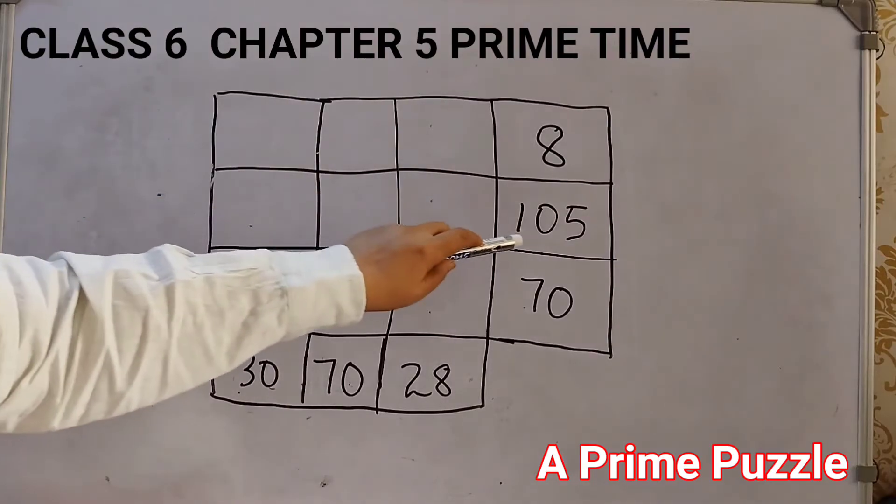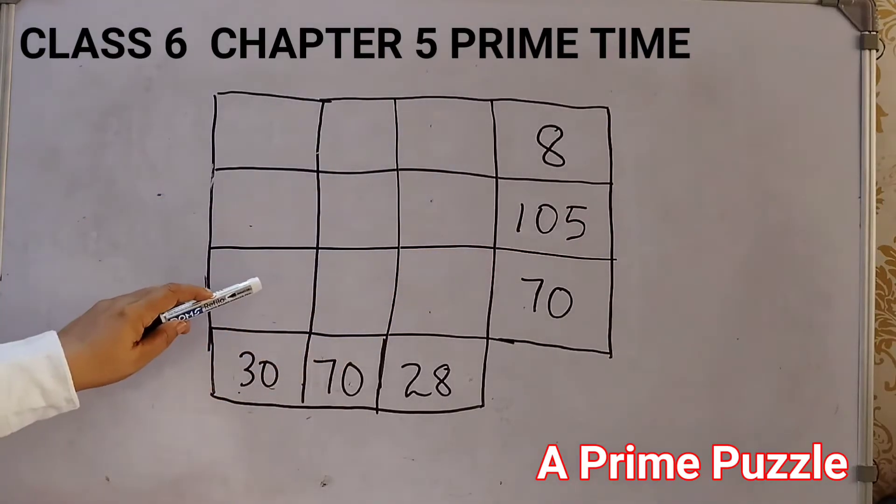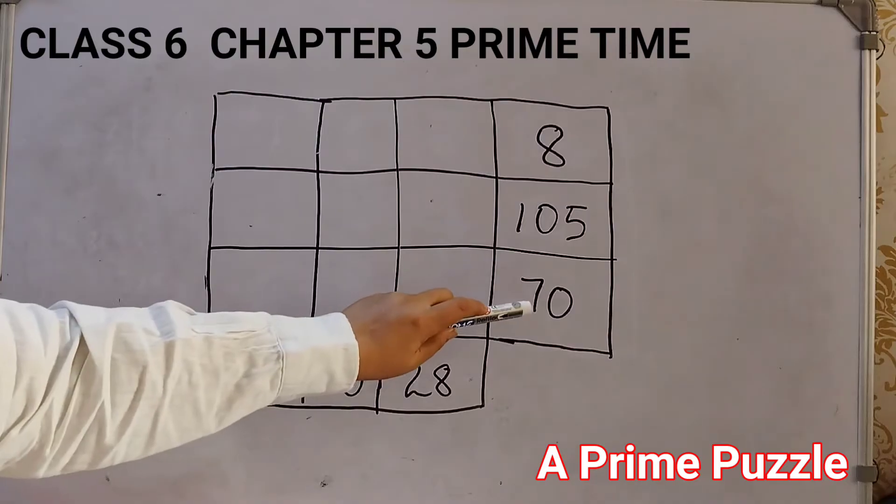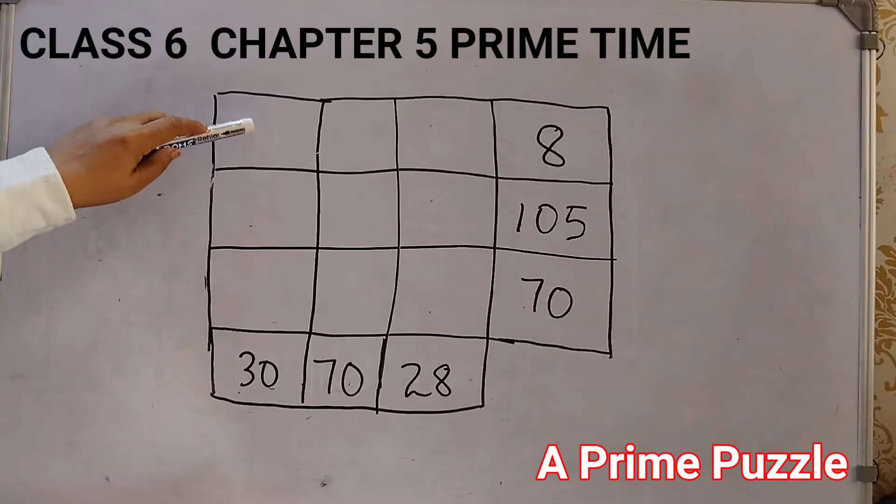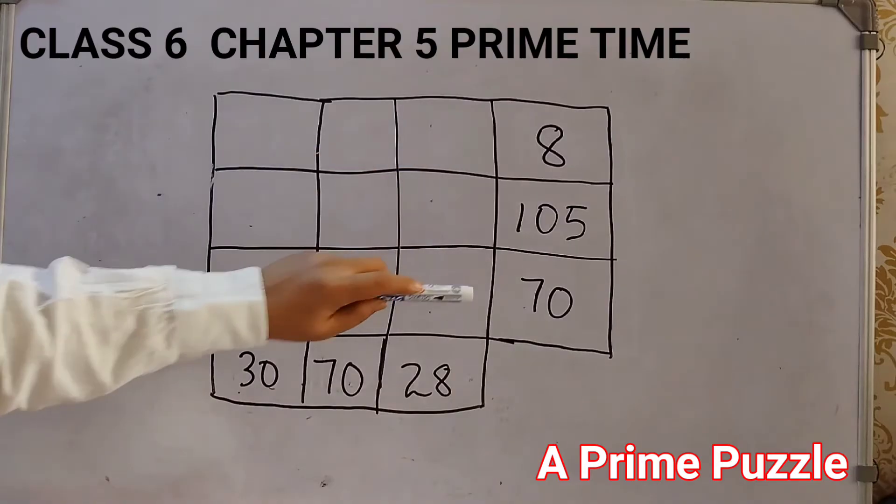Similarly, these three numbers should give 105. Product of these three numbers should give 70. So each row should give me this number and for columns, whatever numbers we have here when multiplied should give 30, similarly for the second column and the third column. So let's get started.